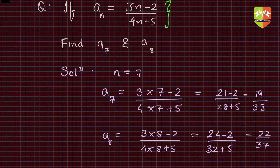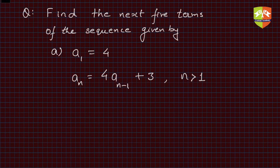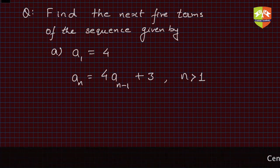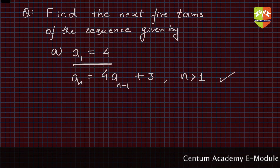Now in this question, it says to find the next five terms of the sequence given by: a1 equals 4 and a_n equals 4 times a_(n-1) plus 3. So this is how the sequence has been defined. The first term is given to be equal to 4.